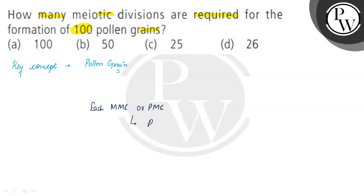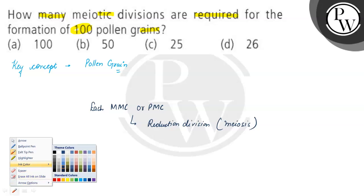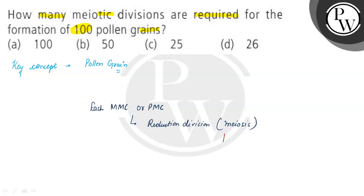undergoes reductional division. This reductional division takes place through the process of meiosis, because only meiosis is a cell division in which reductional division occurs, and it gives rise to 4 pollen grains.